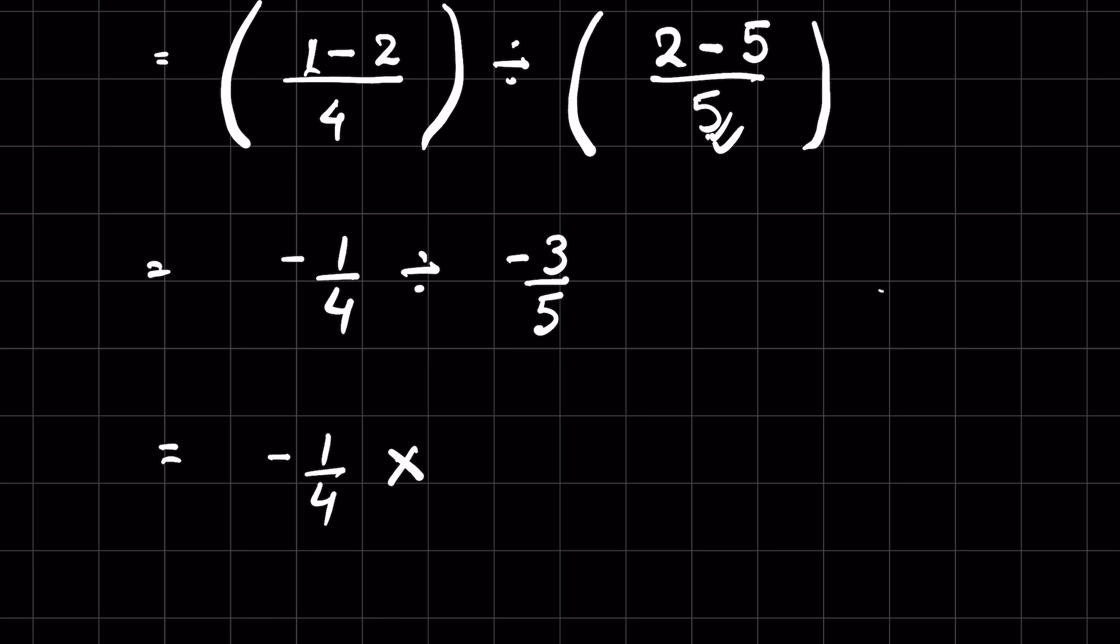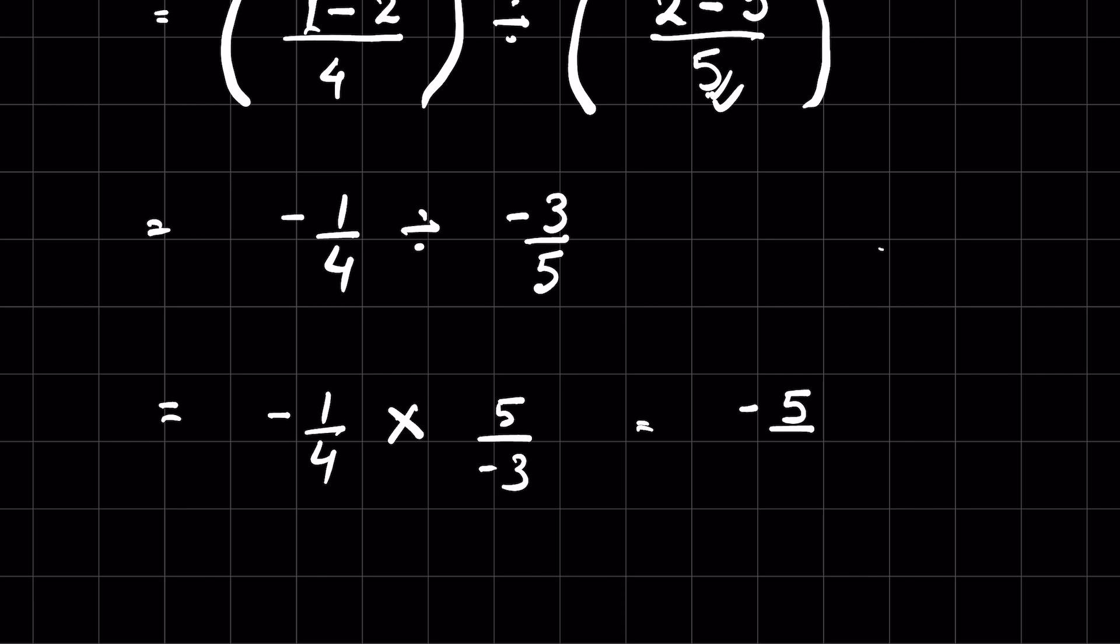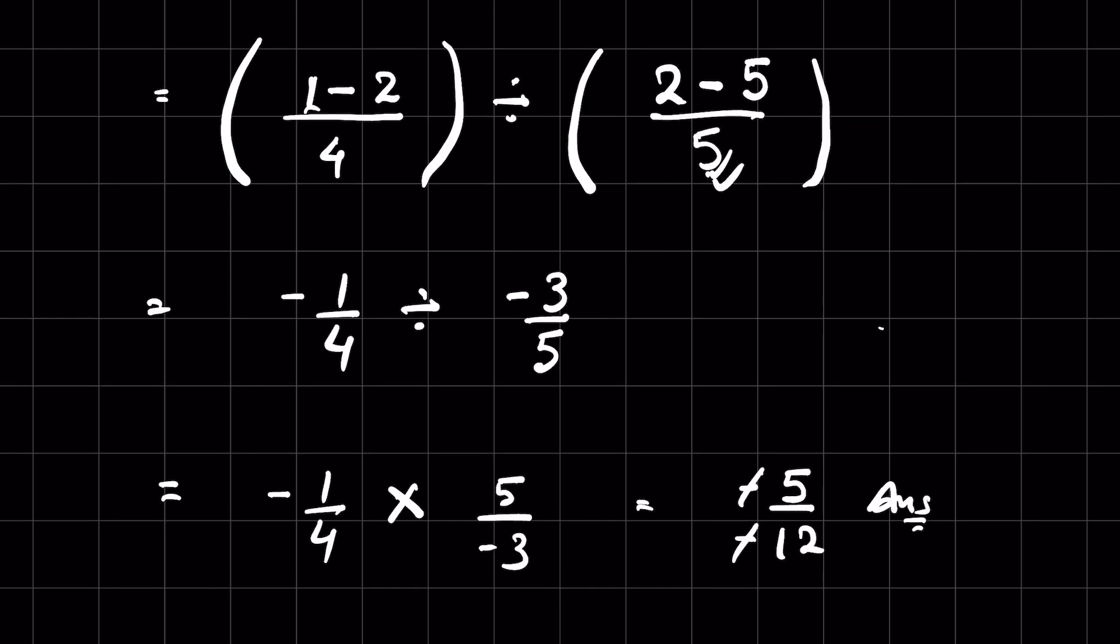Now this is the division of fractions. Negative 1 upon 4, when we convert division into multiplication, the number after that gets inverted, so it will be 5 upon negative 3 or minus 5 upon 3. 1 times 5 is 5, 4 times 3 is 12. Negative times negative gets cancelled, so this is 5 upon 12. That's your answer. Let me know in the comment section. Thanks for watching.